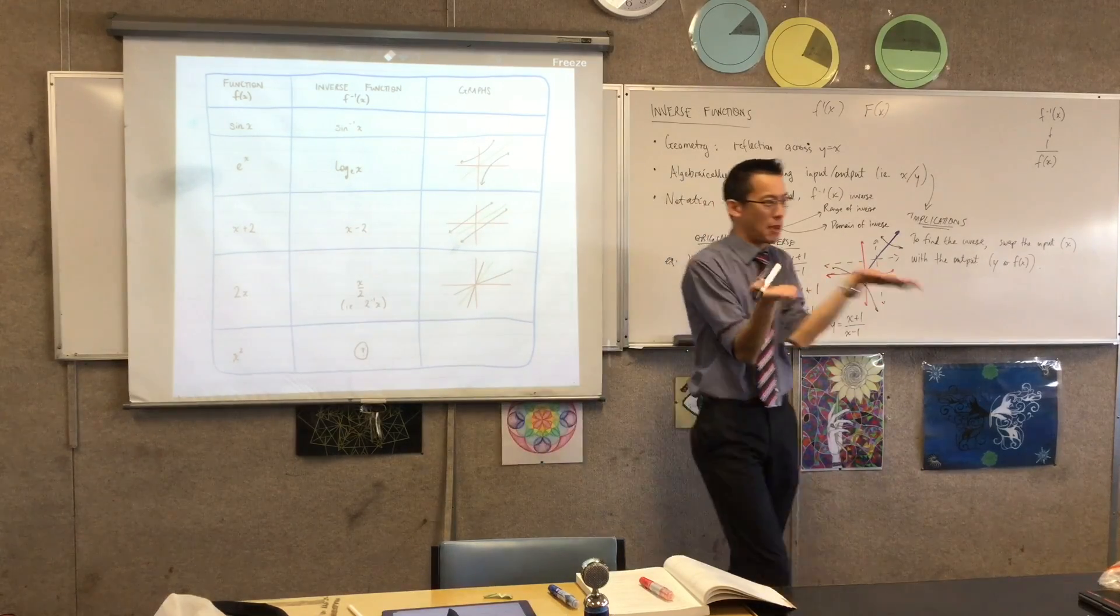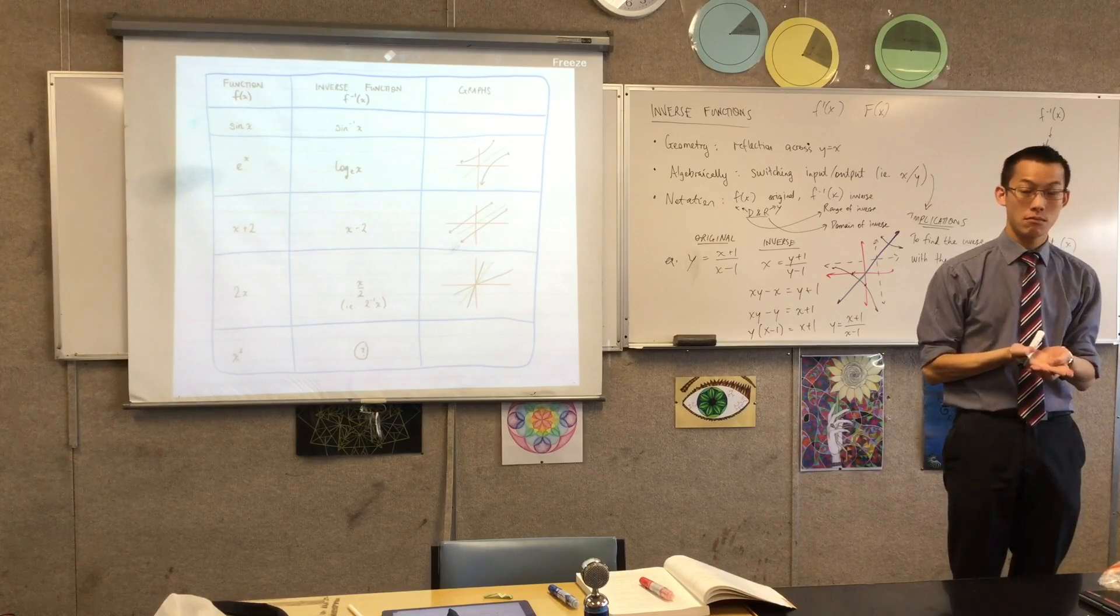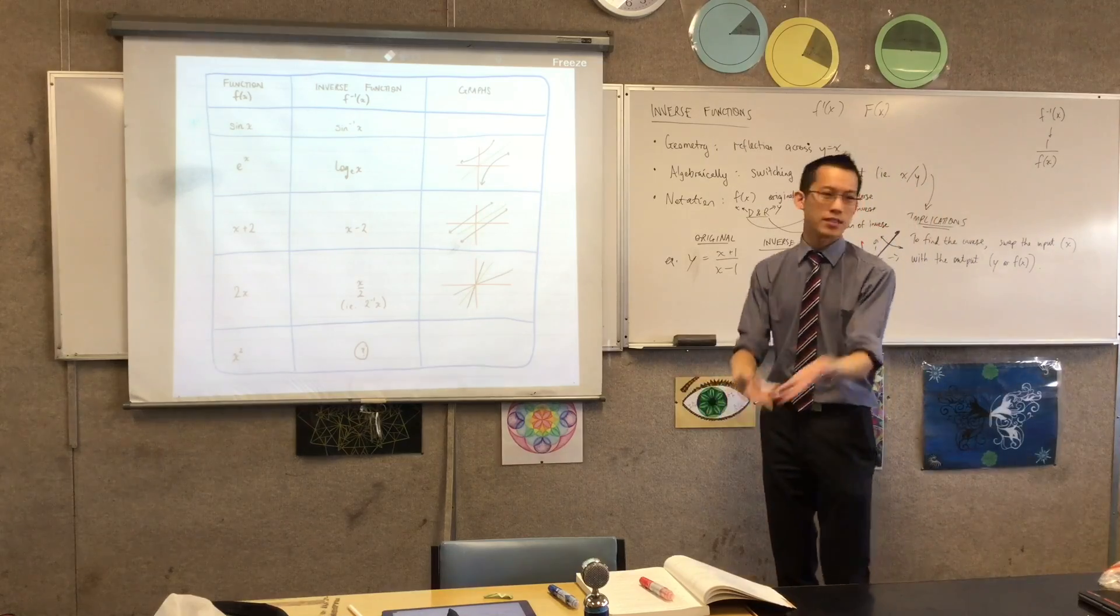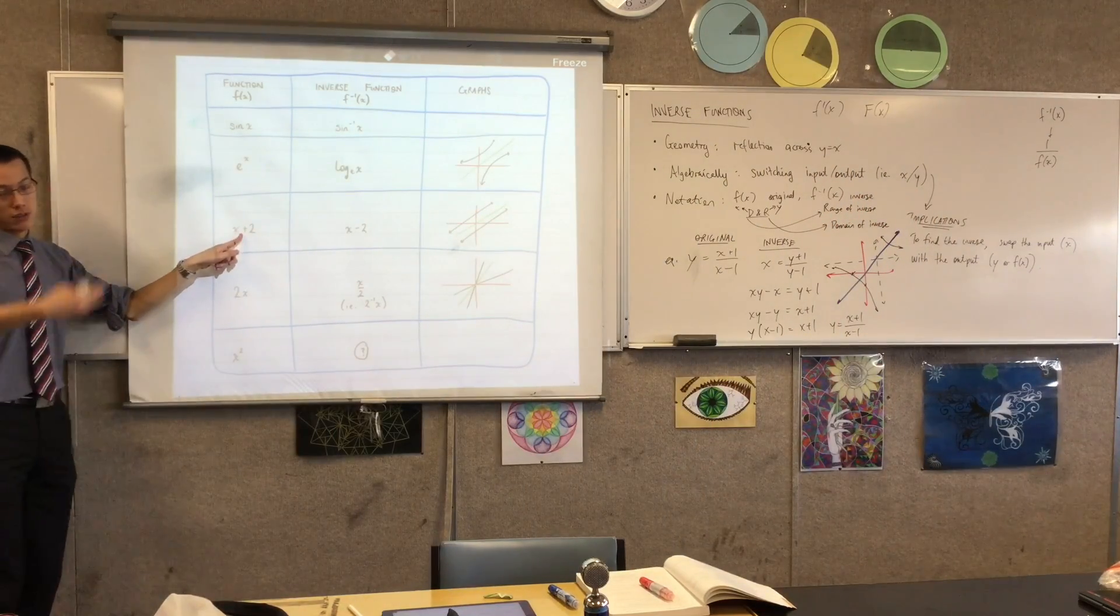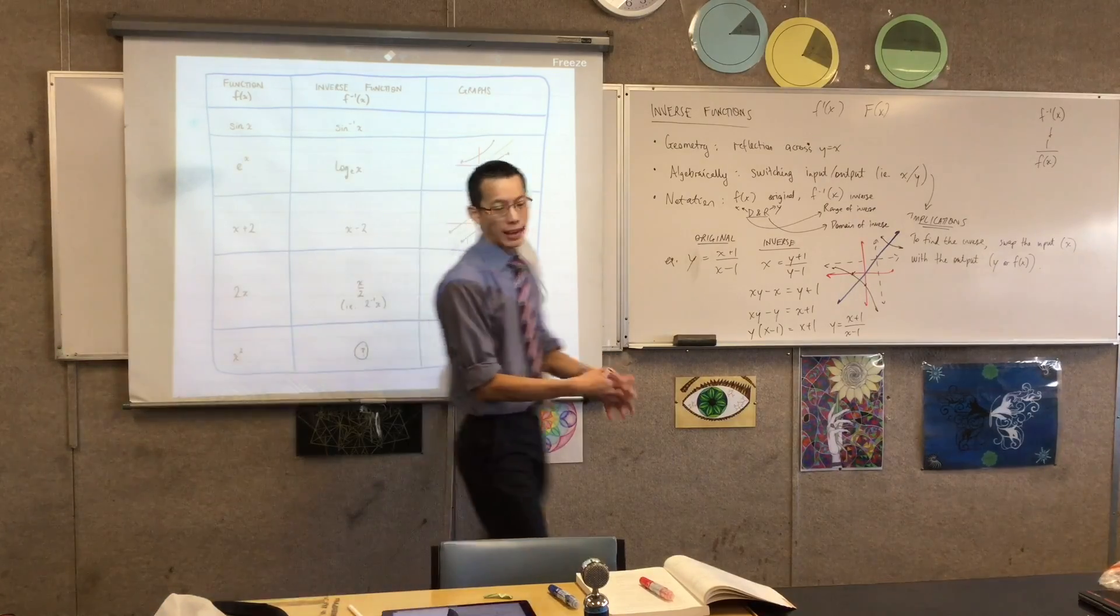Now if you put these two people together, you combine them, what will the net result be? There will be no change. Like whatever number you started with, let's take a number, let's say x equals one. You add two which gives you three, and then you take away two, which brings you back to one.